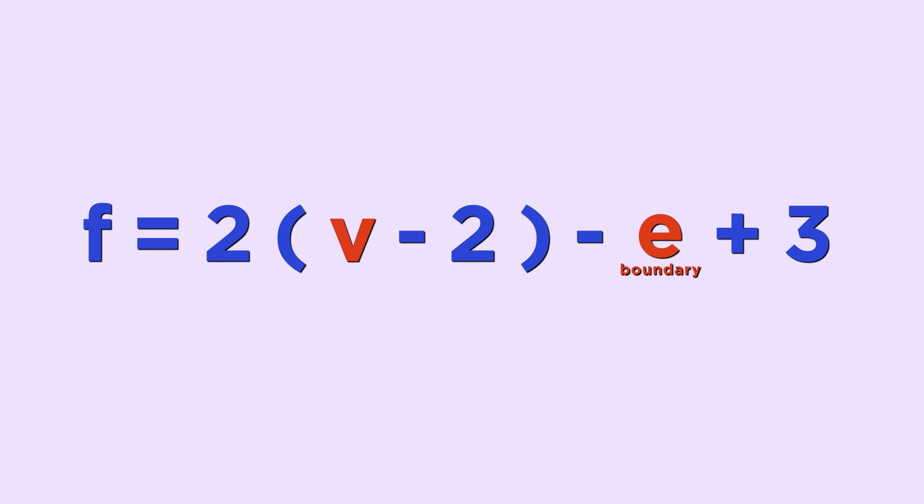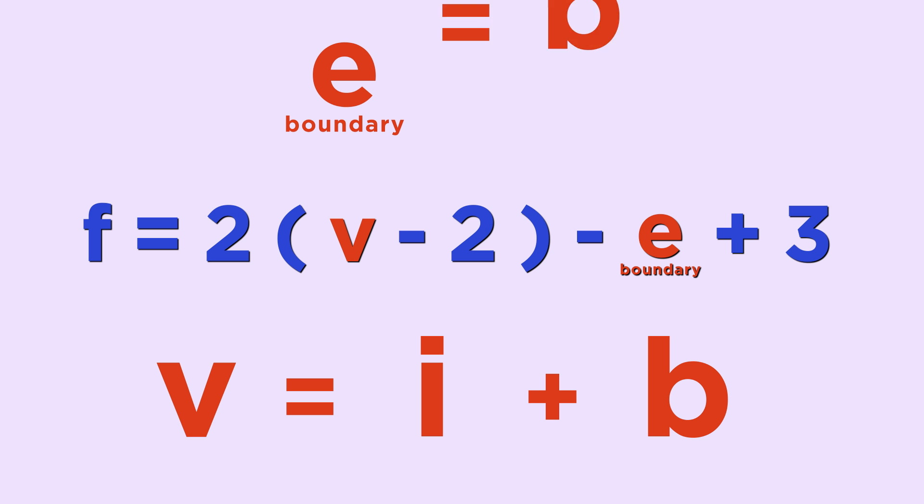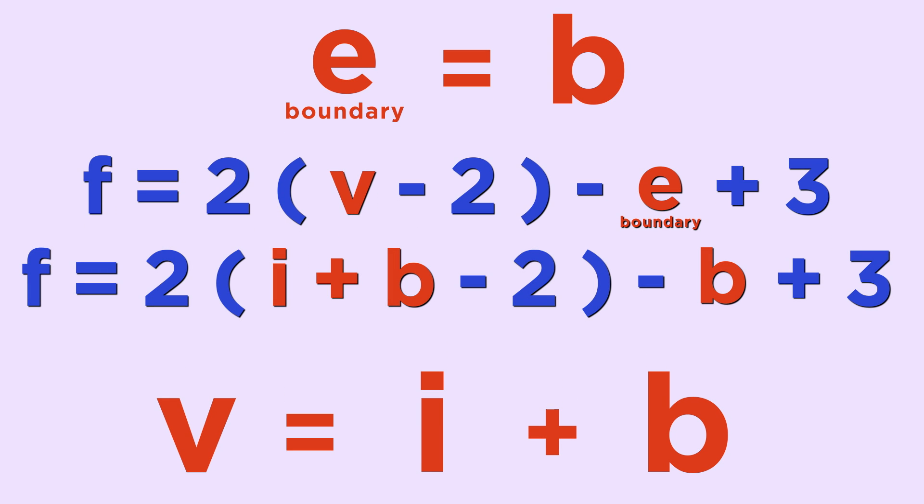Now, notice that v, the number of vertices, is the sum of the number of vertices inside the polygon, which we call the variable i, and the number of vertices on the boundary of the polygon, which we call the variable b. So v equals i plus b. And the number of edges on the boundary is equal to b, the number of vertices on the boundary. We plug these into our equation and do some algebraic rearranging to get this.